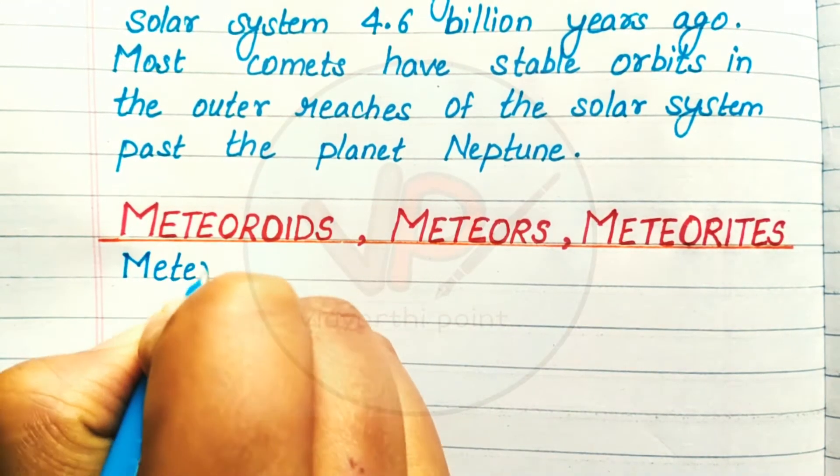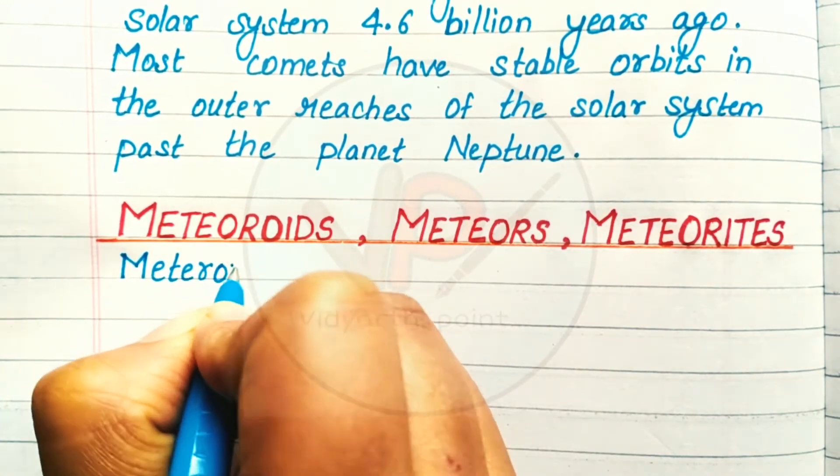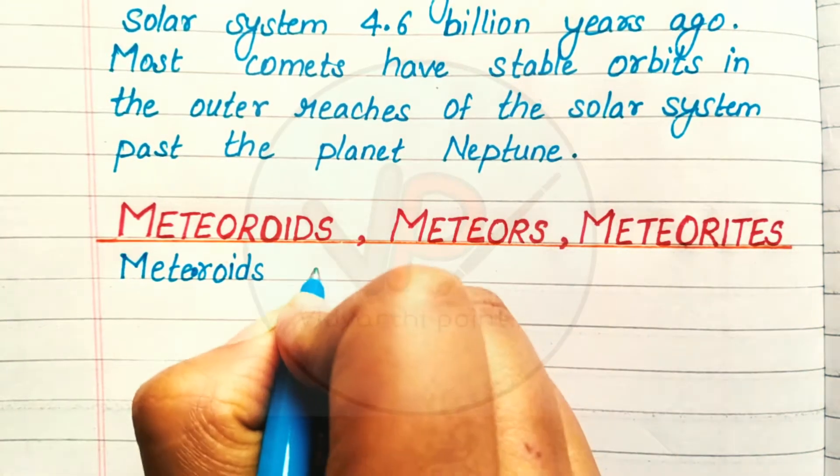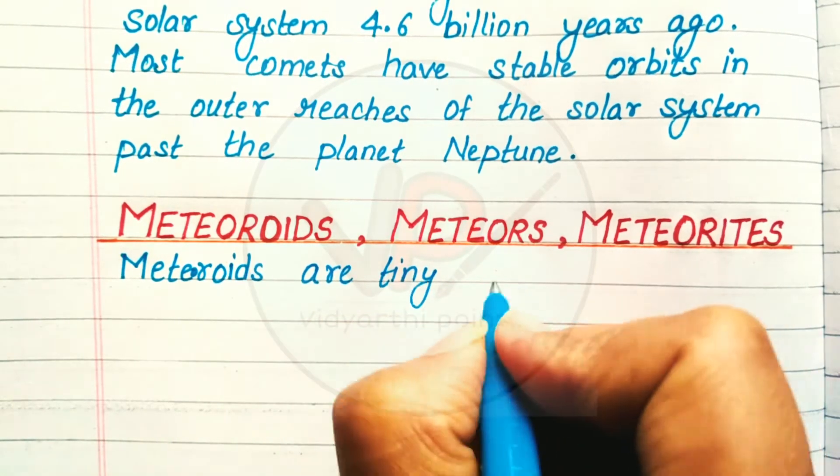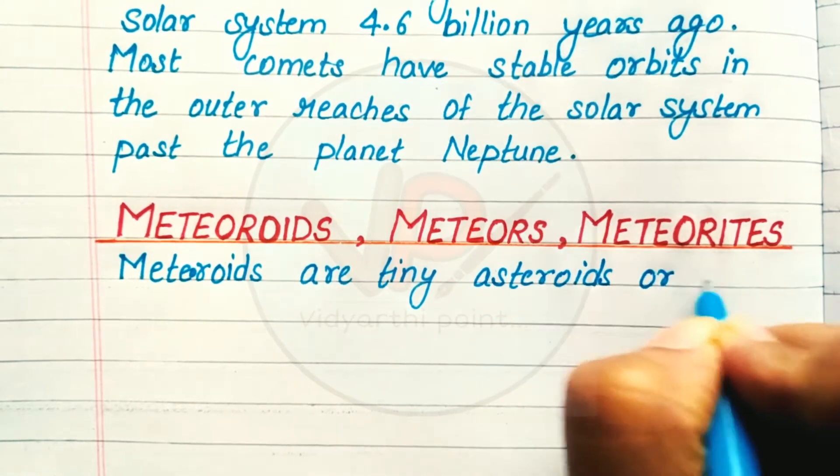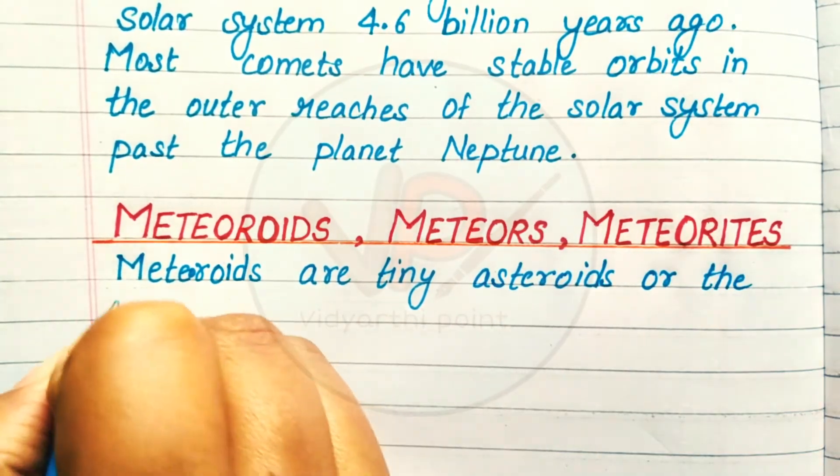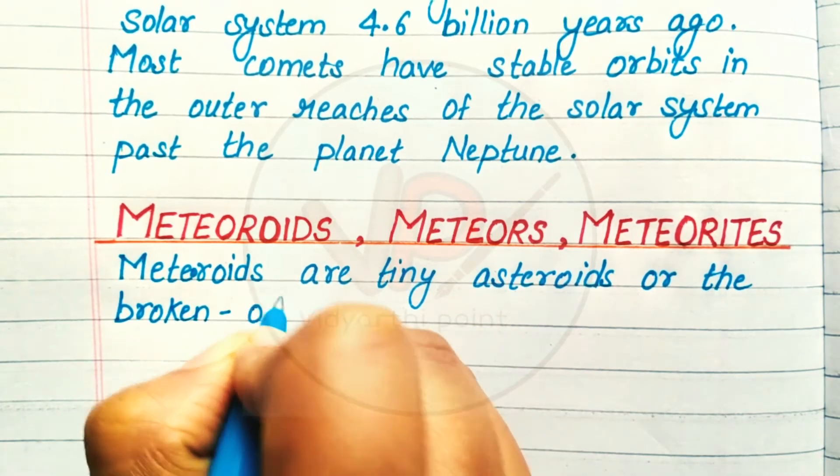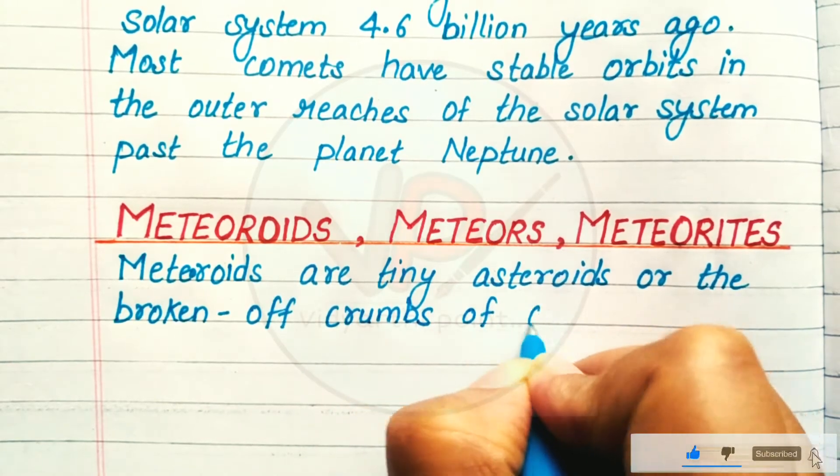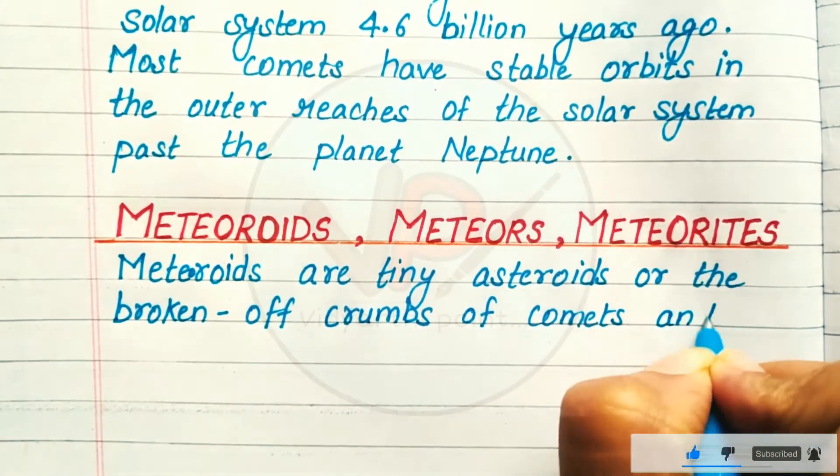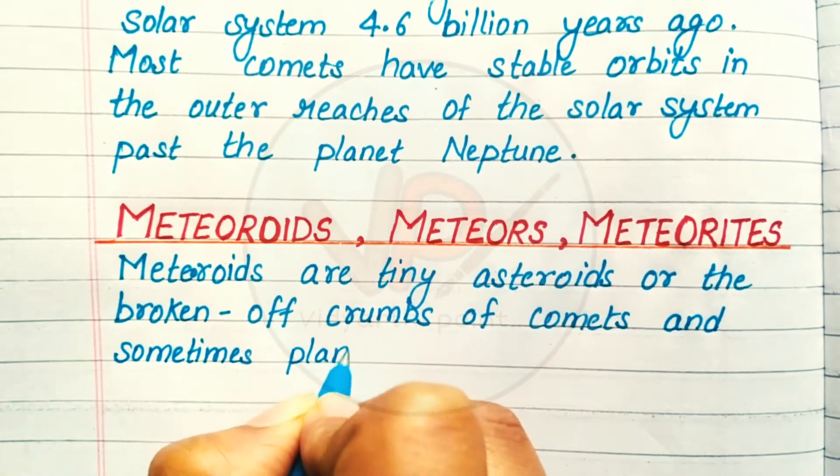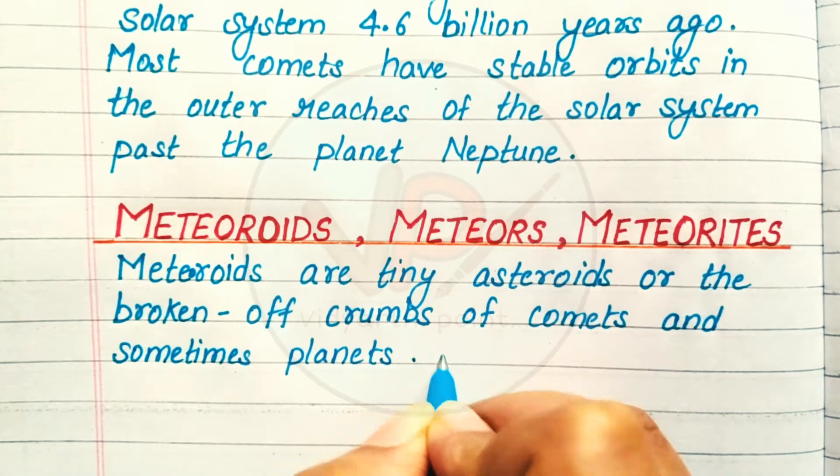Next, meteoroids. Meteoroids are tiny asteroids or the broken off crumbs of comets and sometimes planets.